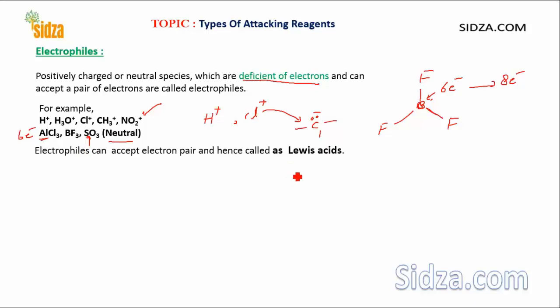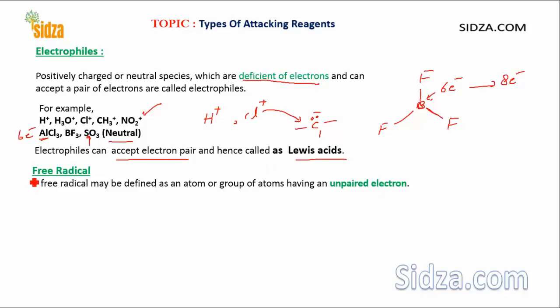According to the Lewis concept, an electron pair acceptor is an acid. Since electrophiles can accept electron pairs, they are called Lewis acids. So, electrophiles behave as Lewis acids, while nucleophiles behave as Lewis bases.